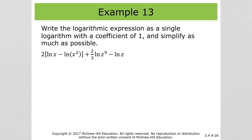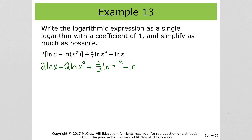For example 13, we need to distribute the 2 first: 2 times natural log of x minus 2 times natural log of x squared, plus 2/3 natural log of z to the 9th, minus natural log of z.